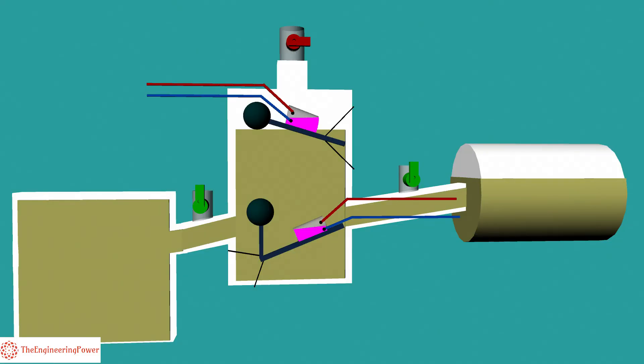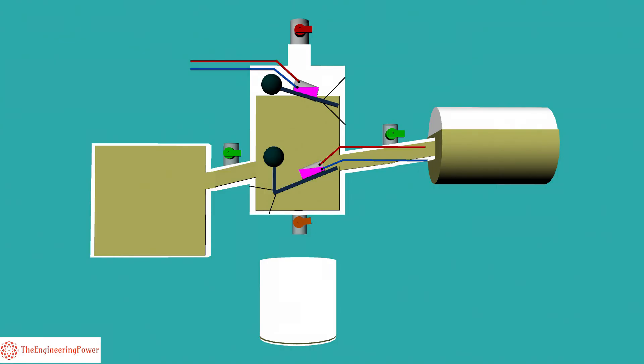For testing the operation of Buchholz relay for trip function, the following procedure is adopted. First, the valves to the Buchholz relay from both the main tank and conservator are closed so that during testing oil doesn't come to the relay. Then oil is drained from the Buchholz relay through the drain plug located at the bottom of the relay.